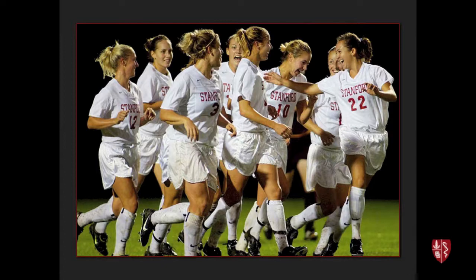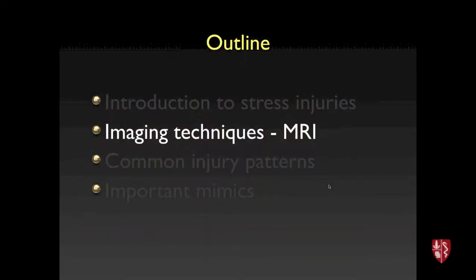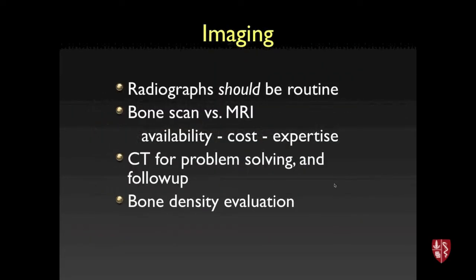For imaging techniques, radiographs should be obtained first as they may help make the diagnosis, though they are often limited. Bone scan and MRI are competitive in sensitivity for detecting stress injuries. At Stanford we strongly favor MRI because we are focused on distinguishing stress reaction from stress fracture — MRI can show fracture lines directly, whereas bone scan cannot.